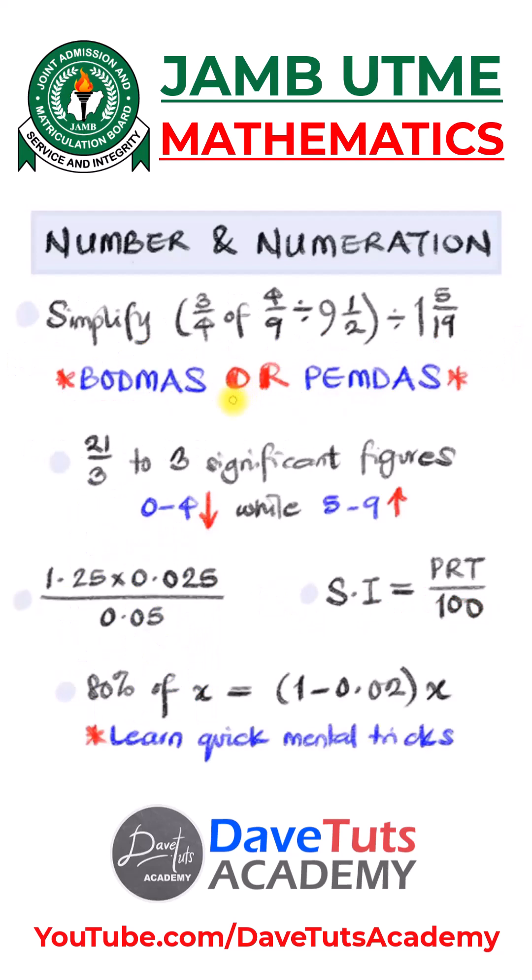Now the next topic in number and numeration involves fractions, decimals, approximations, percentages, profit and loss, shared and value added tax, ratio, proportion and rate.